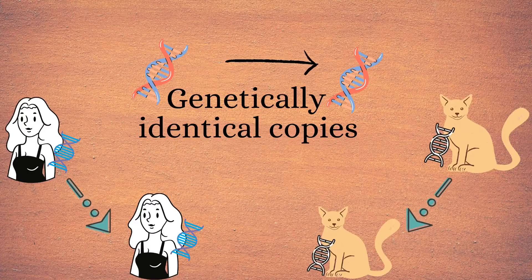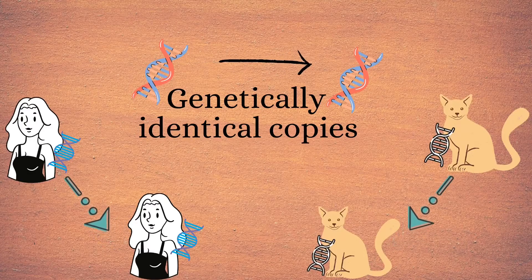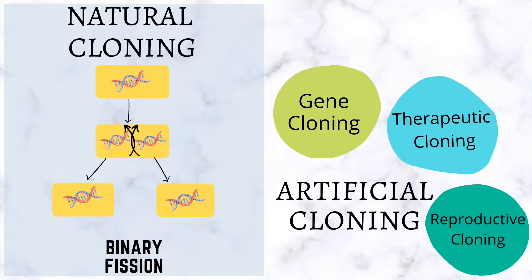Cloning refers to the creation of genetically identical copies of an organism. Cloning can occur naturally, as in the case of bacteria which produce genetically identical offspring through asexual reproduction, or it can occur artificially.